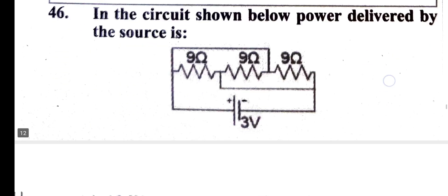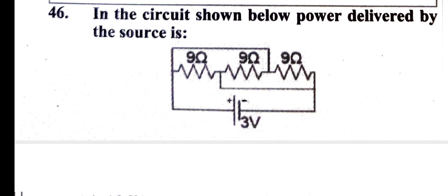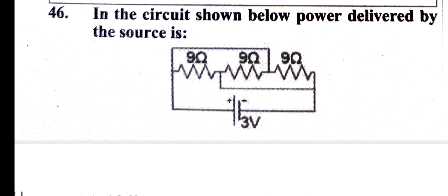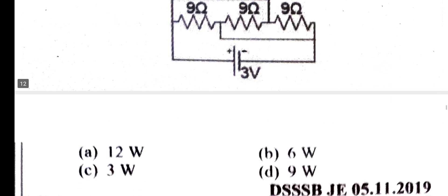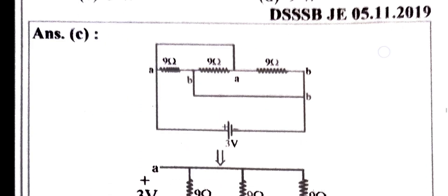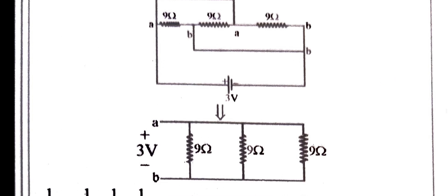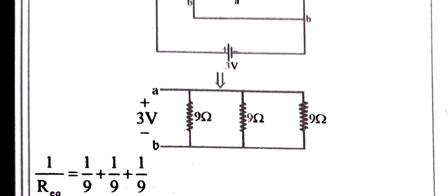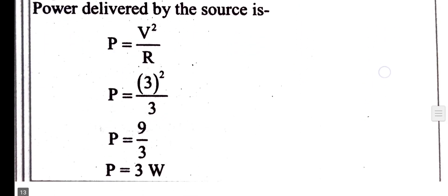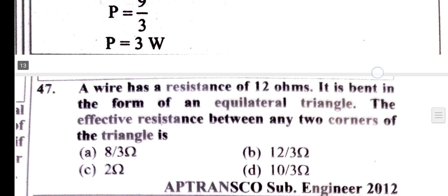Now we can do the circuit shown below — power delivered by the source. Nodes A, B, C. Parallel equivalent R equals 3 ohm. Power is equal to V² by R, using 3 ohm.